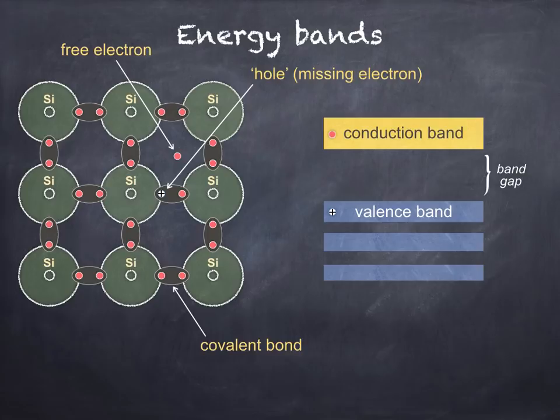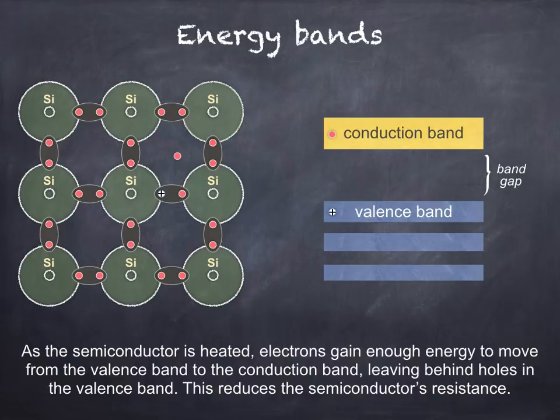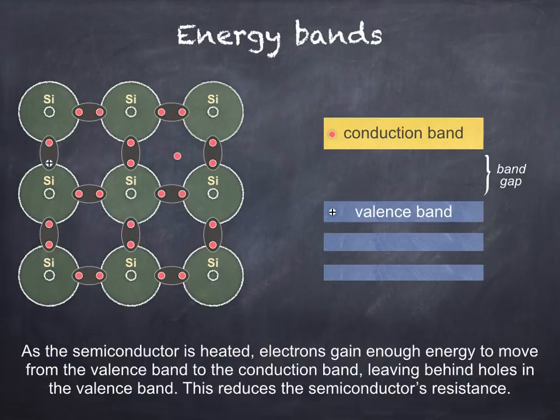As the semiconductor is further heated, more covalent bonds are broken, resulting in more electrons jumping to the conduction band, with more positive holes created in the valence band. As the temperature of a semiconductor increases, its resistance decreases, due to the motion of the electrons in the conduction band and holes in the valence band. Looking at the diagram on the left, we can see that electrons from neighbouring atoms can move to fill a hole, leaving behind a hole in their previous position. Although strictly this was caused by the motion of negative electrons from left to right, we can also describe it as the motion of positive holes from right to left.